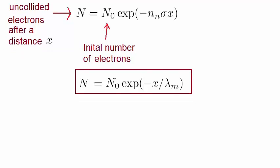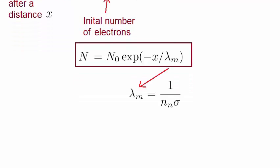We can rewrite this expression in the following compact form, where lambda subscript m is this: 1 over n sigma, is known as the mean free path. It is basically the average distance travelled by electrons between collisions.